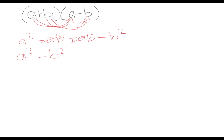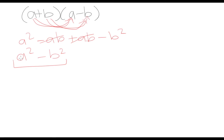What we have here is a very special case known as the difference of two squares. We have two perfect squares — a times a and b times b — and we're taking the difference between these two squares.